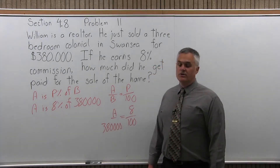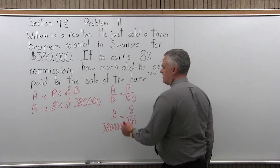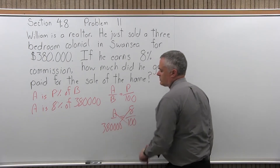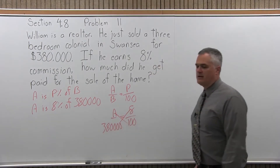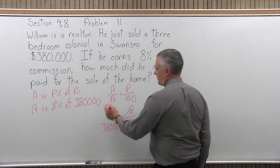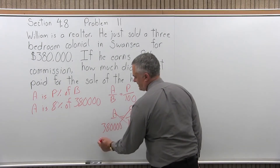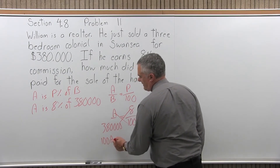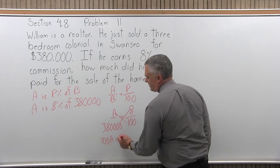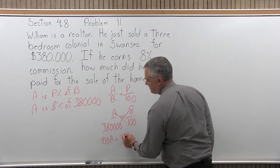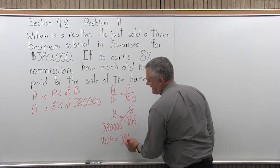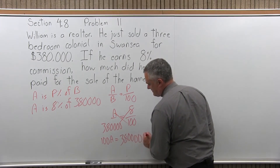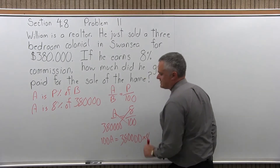So there it is filled in. To find the answer, I will cross-multiply and divide. Going one way, I have 100 times A, which is 100A, and then the other way, 380,000 times 8.